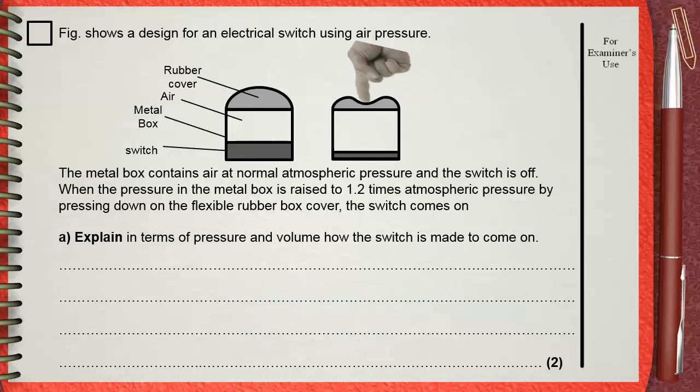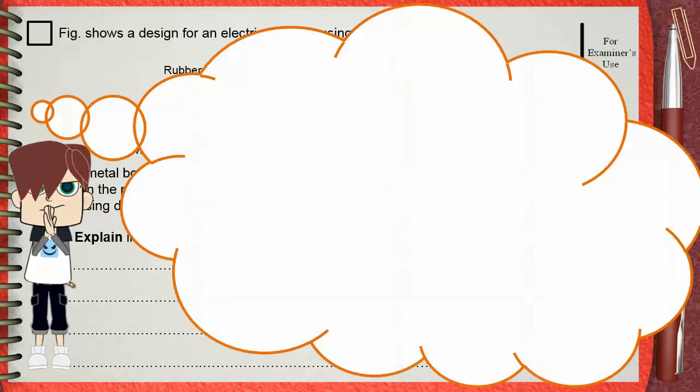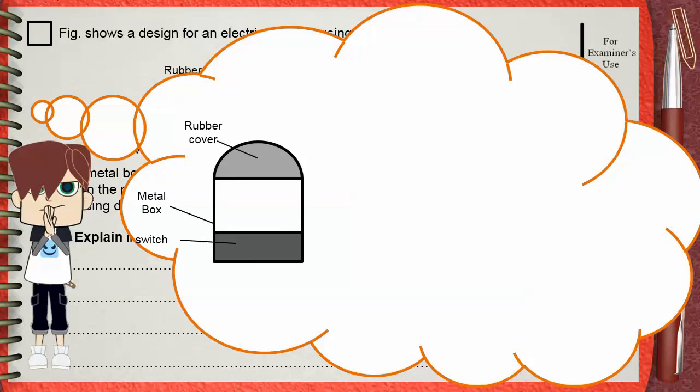Let's now study the mechanism of our switch. This is the metal box, this is the switch, this is the rubber cover. Air is trapped under the rubber cover inside the metal box. This red color shows the volume of air that is under the rubber cover.